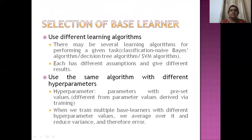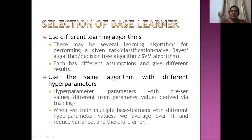How do we select individual base learners? There are three methods. The first is to use different learning algorithms. For example, for classification you can use a Naive Bayes algorithm, decision tree algorithm, or SVM algorithm. Each has a different set of assumptions and therefore produces a different set of results.